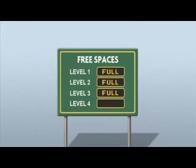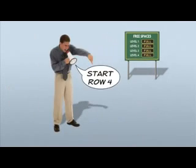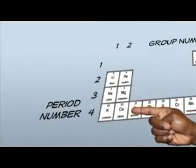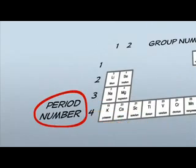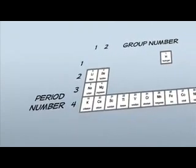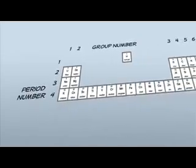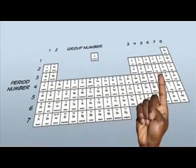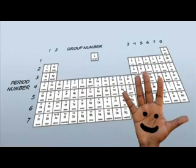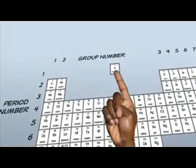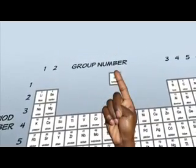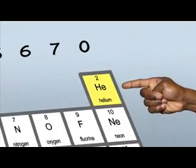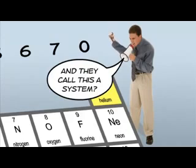The periodic table is arranged so that every time we fill an energy level, we start a new row or period. You can see that the number of occupied energy levels is the same as the period number. And as you go across each period from left to right, an energy level gradually becomes filled with electrons — one electron on the left to maximum on the right. The number of electrons in the highest energy level matches the group number, with the exception of group zero which has eight electrons, and apart from helium which has only two.